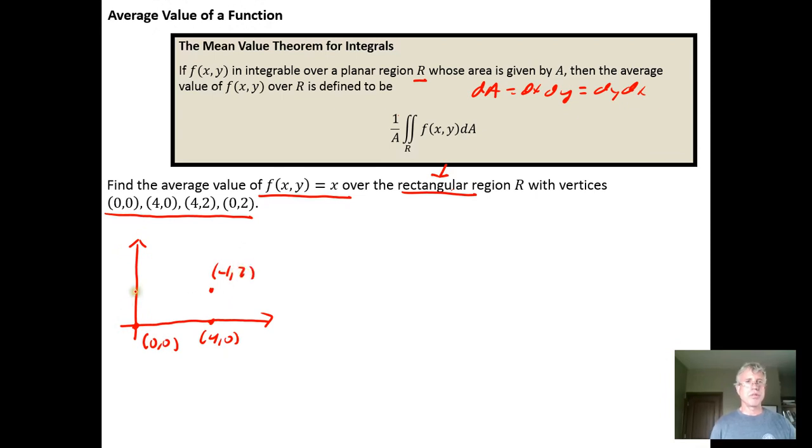And over here at the point (0,2). So we're just integrating over this rectangular region right here. The nice thing is that we can calculate the area of this region without using calculus. We see that it has width 4 units and height 2 units, so 4 times 2 is 8 square units is the area of that region.